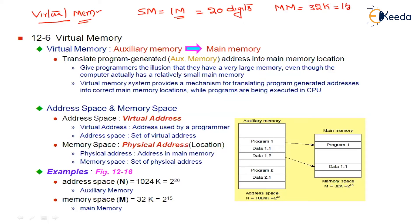The secondary storage requires 20 address digits. I also have a main memory of 32K, which requires 15 address digits. So every time, being a programmer, when you want to use an address, your address must be equal to 15 digits, not 20 digits, because the secondary memory is not available to the programmer. He has to generate addresses equal to 15 digits whenever he is writing code.